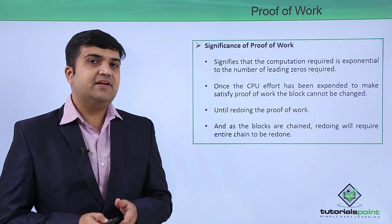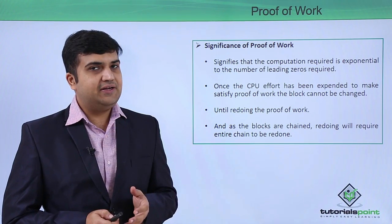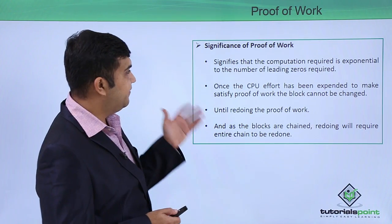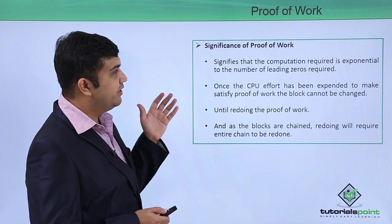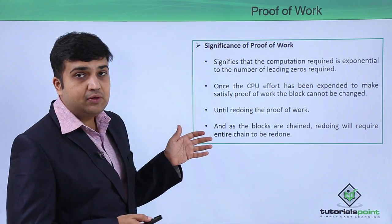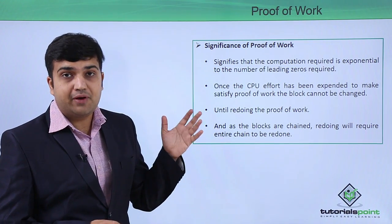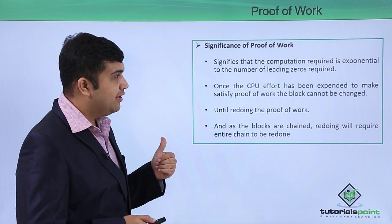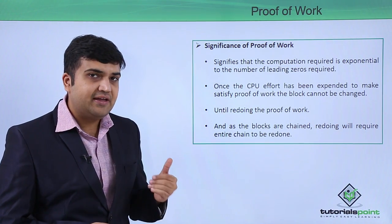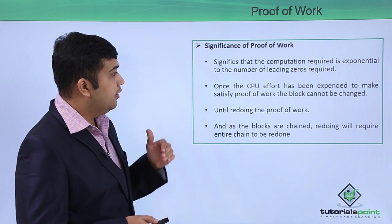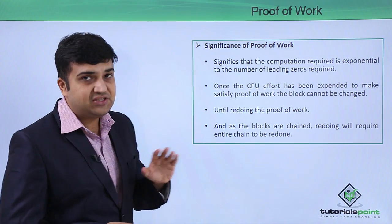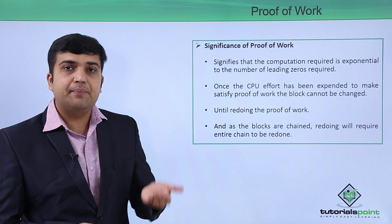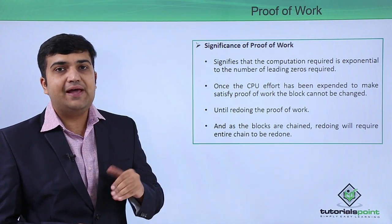What is the significance of proof of work in the context of blockchain? Proof of work in blockchain signifies that the computation required is exponential to the number of leading zeros required in the proof of work algorithm. As well as, once the CPU power has been expended to satisfy the criteria of proof of work, the proof of work cannot be changed. Hence, if the data is changed, if the block is changed, the proof of work has to be redone again.